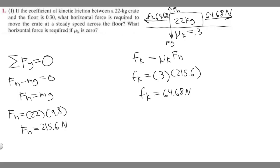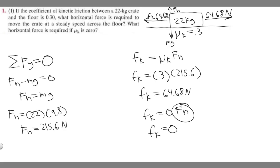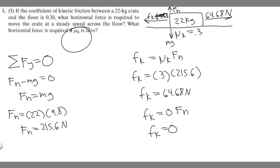For the second part, what is the horizontal force required if mu sub k is 0? If we plug in 0, F sub k equals 0 times F sub n, which is 0 no matter what the normal force is. So the kinetic friction is 0 newtons, meaning there's no friction to overcome. The horizontal force required would also be 0 newtons.